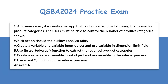A. Create a variable and variable input object and use the variable in the dimension limit field. B. Use the first sorted value function to extract the required product categories. C. Create a variable and variable input object and use the variable in the sales expression. D. Use a rank function in the sales expression.